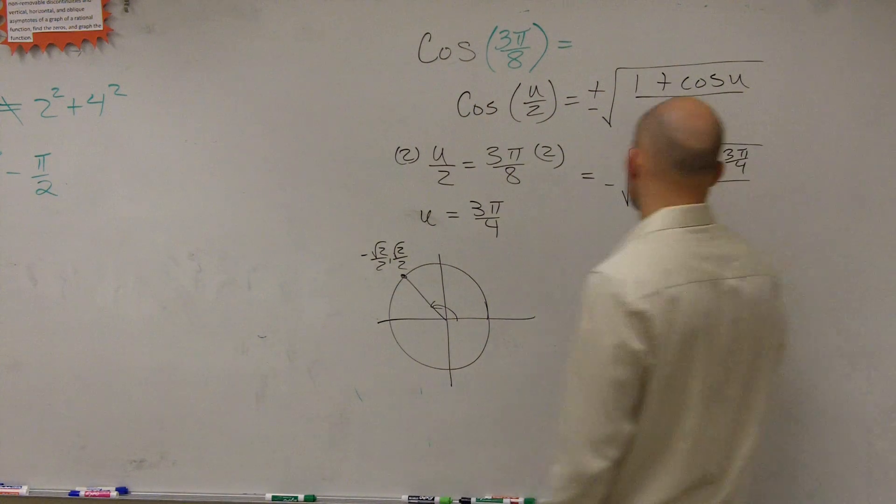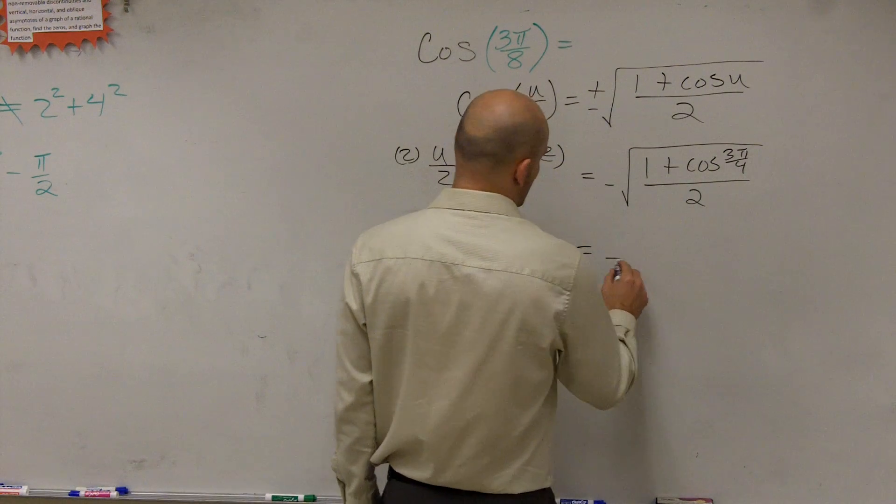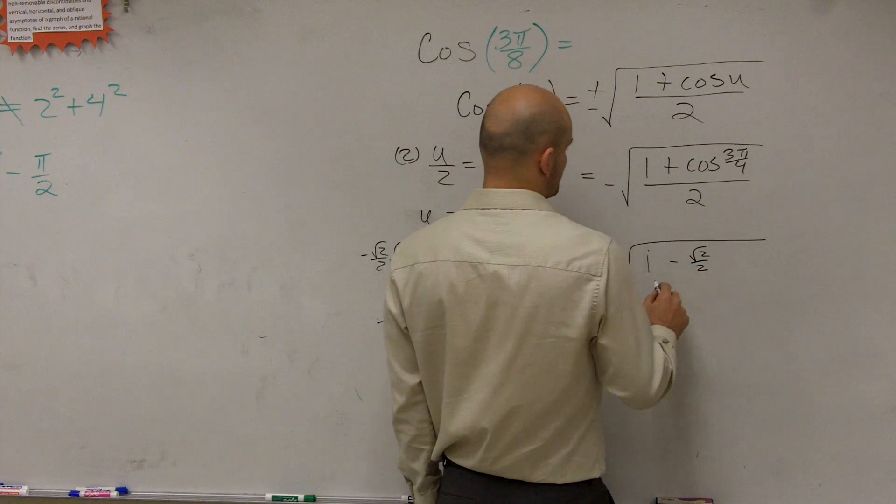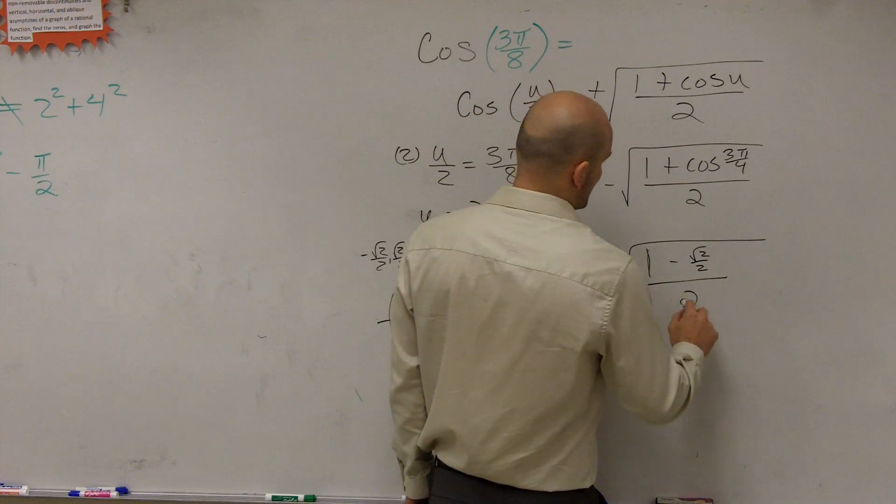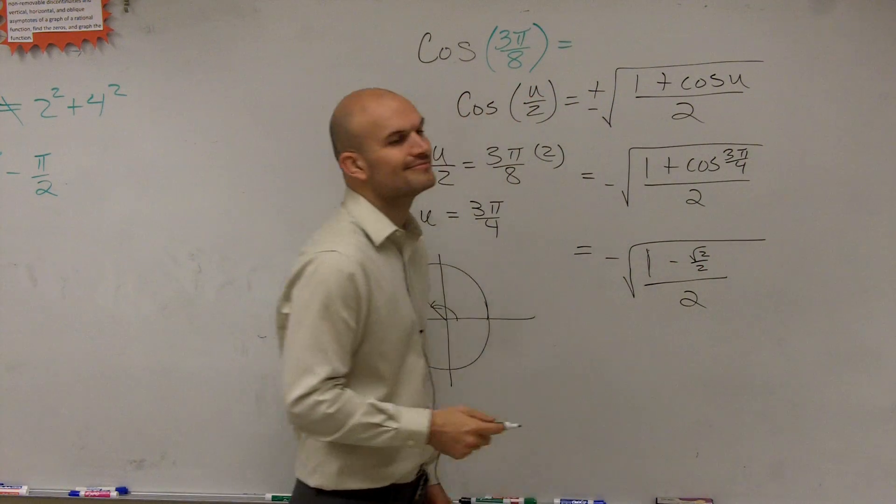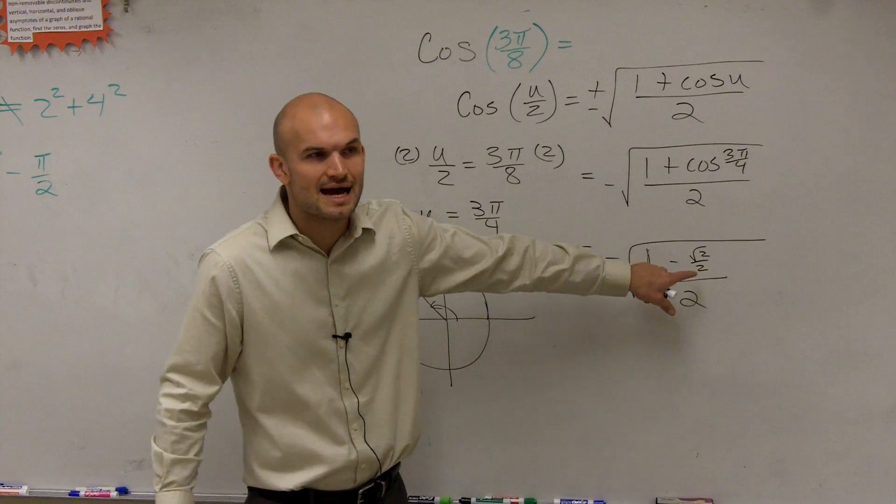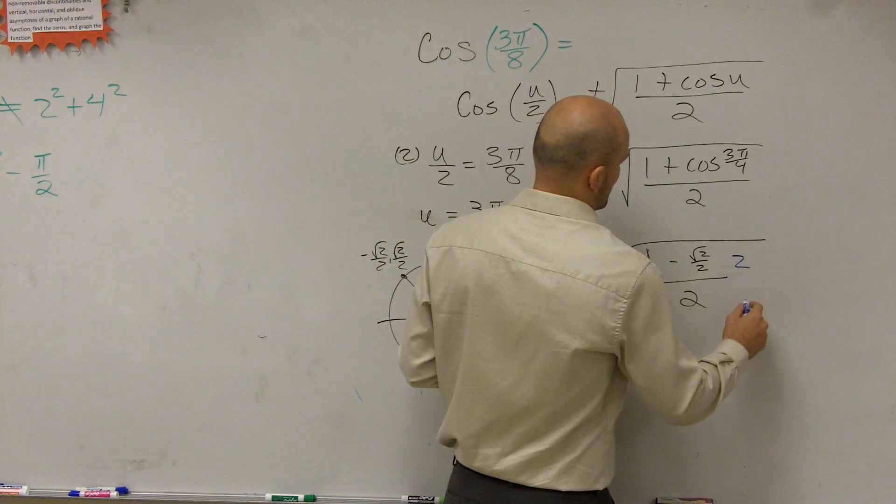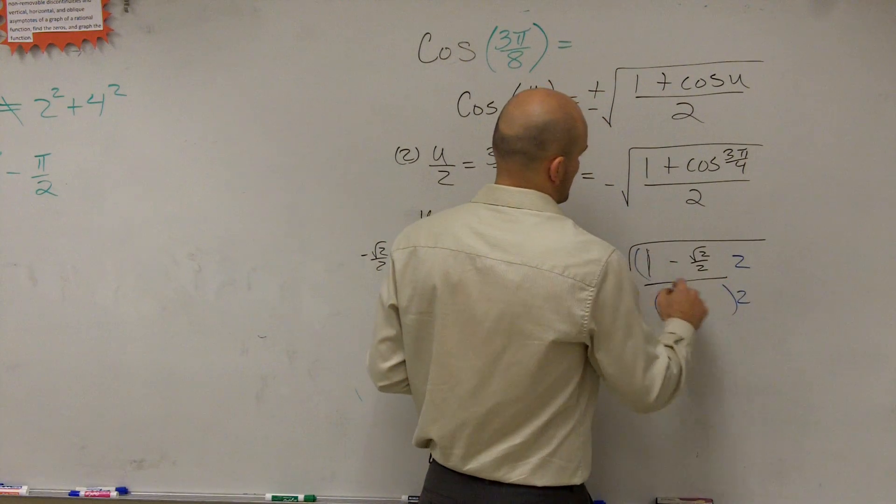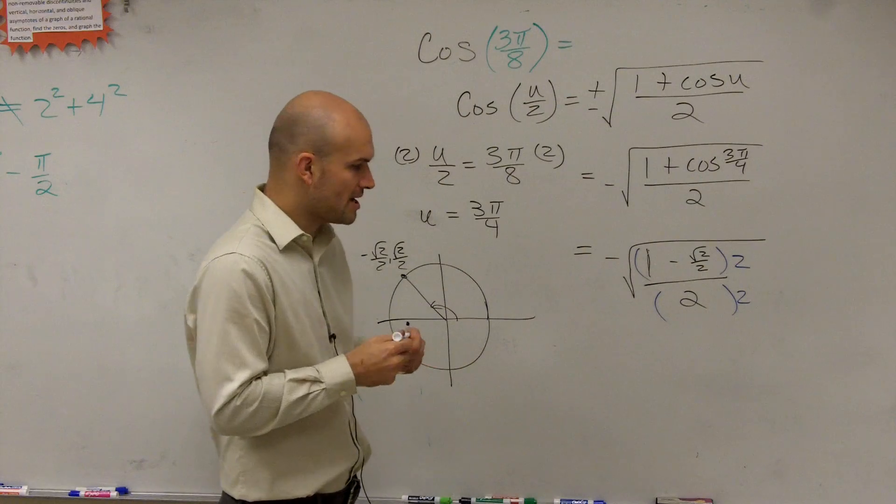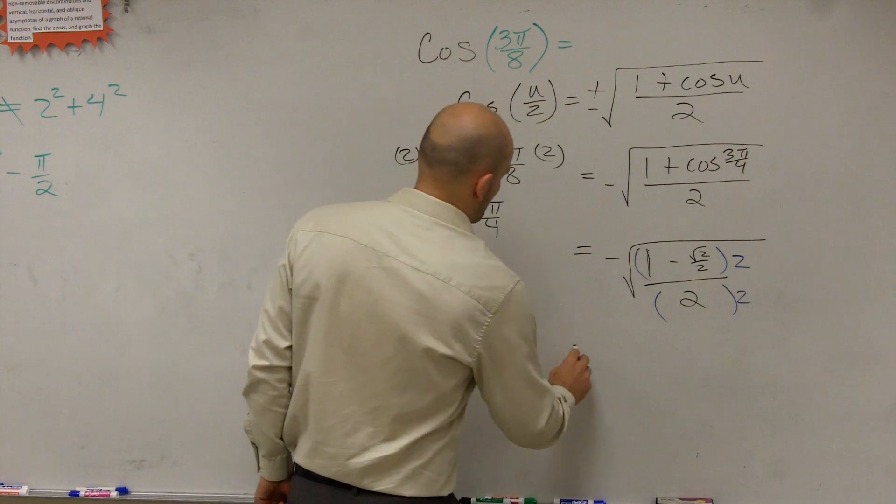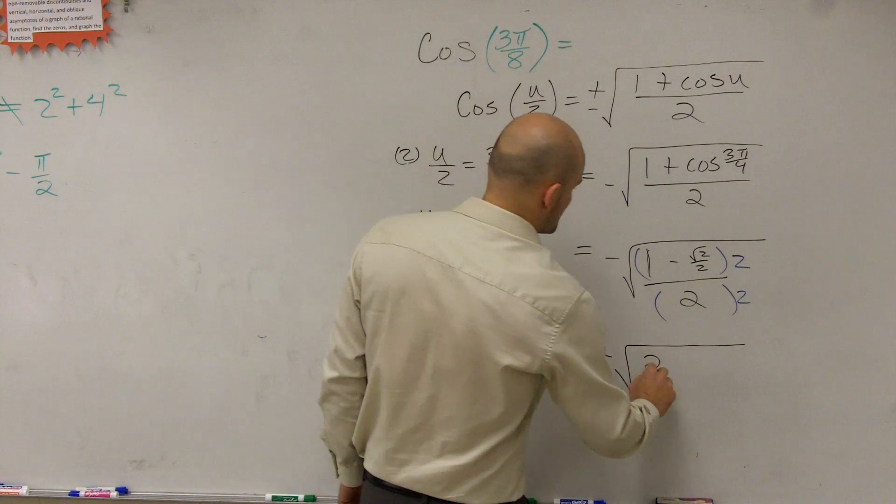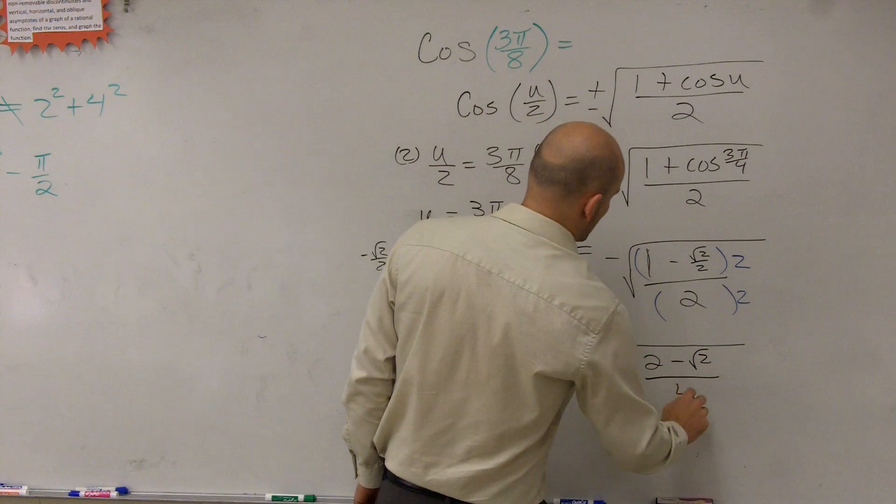So now let's go and plug in. We said that's negative 3π/4. So that's negative square root of 1 minus square root of 2 over 2 divided by 2. You've got to get rid of that 2 in the denominator of the numerator. So you've got to multiply by 2 over 2. Make sure you apply distributive property.